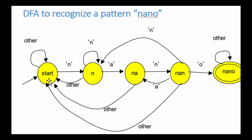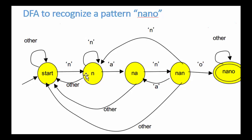In this machine, if you're in the start state and you see an 'n', you go to the next state — meaning you have seen an n. Otherwise, any other character, you stay there. When you're in state n, if you see another n, you can stay there — you don't have to go back. If you see an n and another n, that means you've seen two n's. If you see anything other than n, you must go back to the start state.